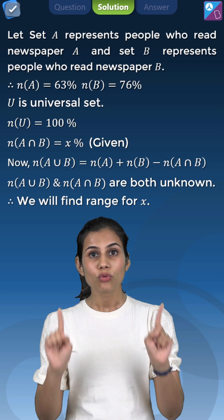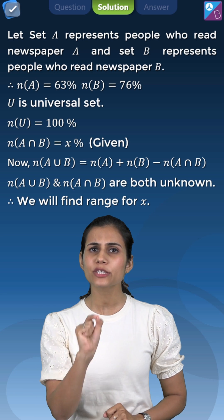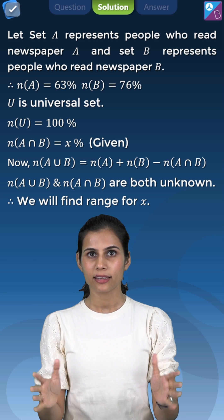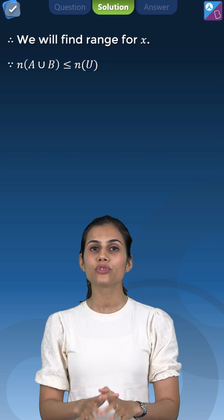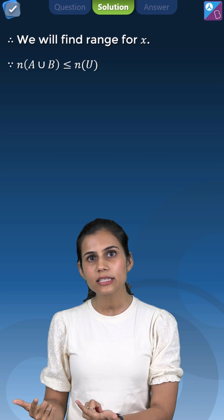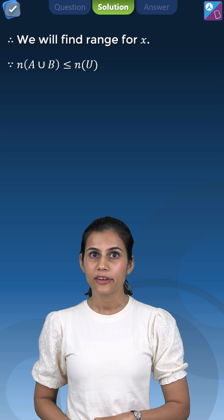Ek equation mein doh quantities unknown hai, matlab max to max, hum ek range mein answer de sakte hai. So let us go back to the basics and recall a very important fact ki A union B jo hai wo at max universal set ke barabar, obviously is 100%.